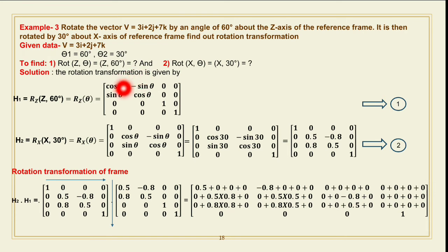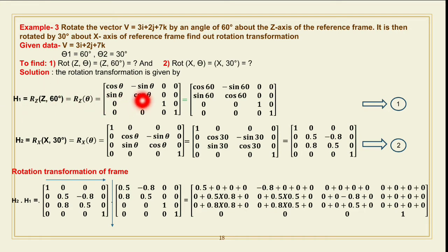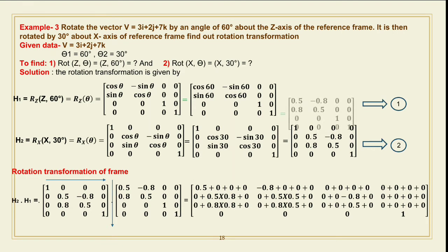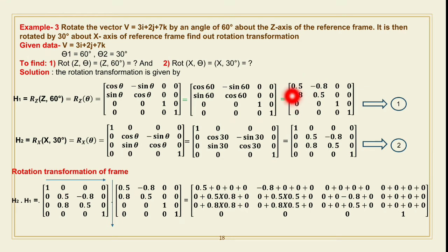Substituting theta = 60 degrees into that matrix gives H1: [cos60°, −sin60°, 0, 0; sin60°, cos60°, 0, 0; 0, 0, 1, 0; 0, 0, 0, 1]. Since cos60° = 0.5 and sin60° = 0.866 ≈ 0.8, the resulting matrix H1 is: [0.5, −0.8, 0, 0; 0.8, 0.5, 0, 0; 0, 0, 1, 0; 0, 0, 0, 1].